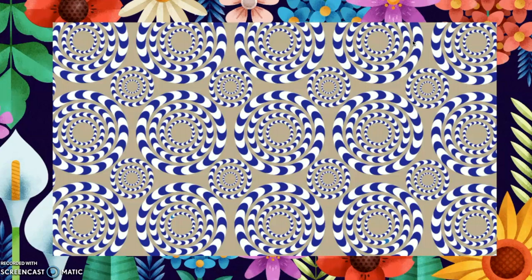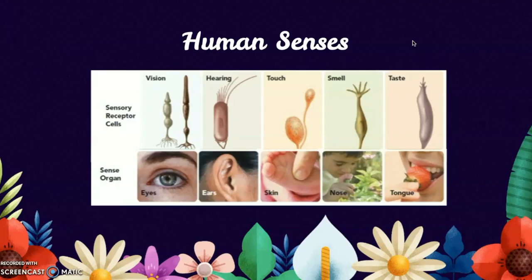Perception is not reality. Our sense organs, such as the eyes, ears, skin, nose, and tongue, allow us to perceive various types of energies or stimuli outside our bodies. These are the basic senses of vision, hearing, touch, smell, and taste, each of which rely on specialized sensory receptors in order to process light, sound waves, pressure, temperature, pain, and different chemical substances.